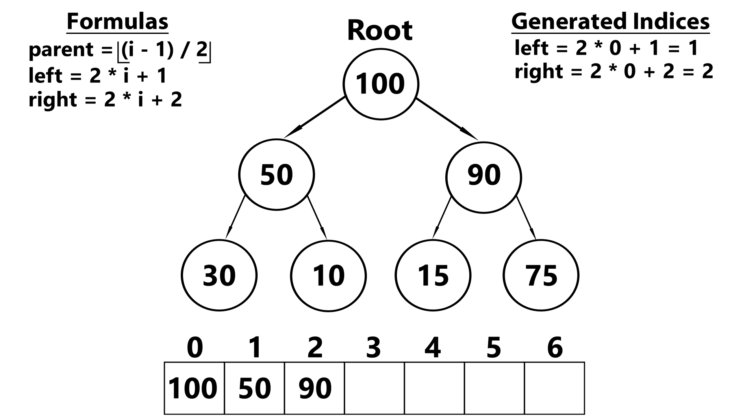Now, let's take a look at 50. 50 is at index one. So its children get placed here. And finally, looking at 90, 90 is at index two. So its children get placed here.